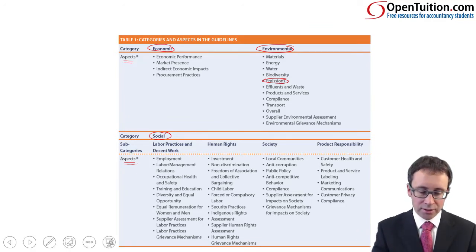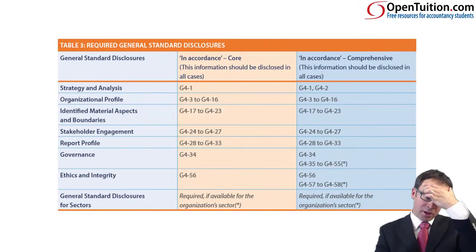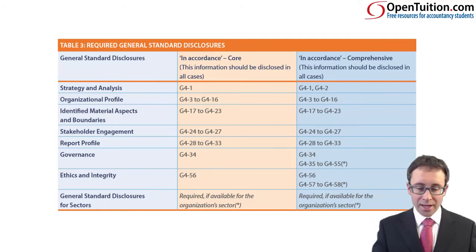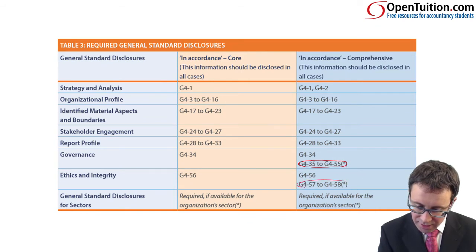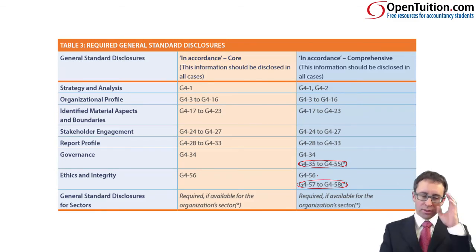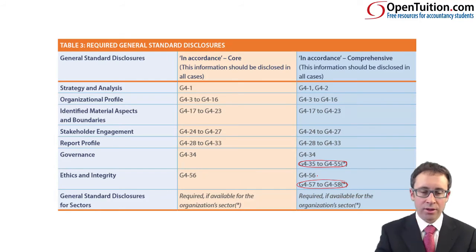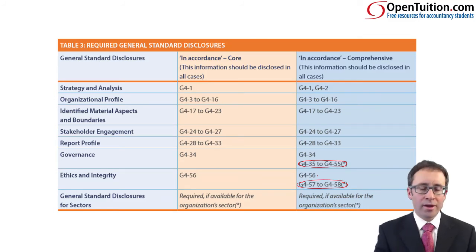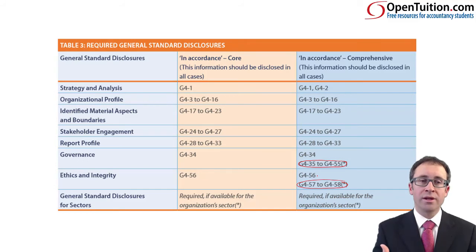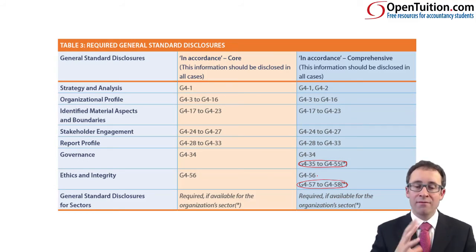That's likely to be one of those select-answer style questions. In terms of the general standard disclosures, there are seven. The additional disclosures under the comprehensive option are for governance and ethics and integrity. In terms of what the standard disclosures represent: strategy and analysis is about how your business is going to ensure stability in terms of risk, impacts, and how that influences your stakeholders. Organisational profile details the products and services the business operates — what do we do and where do we do it? Identify material aspects and boundaries covers the economic, environmental, and social aspects and how you've chosen the material ones.